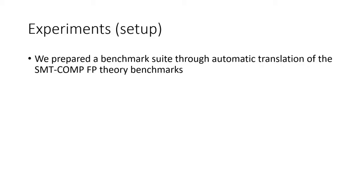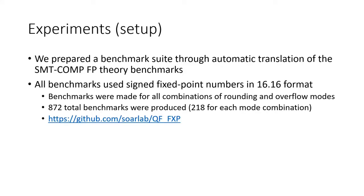We prepared a benchmark suite through automatic translation of the SMTComp floating-point theory benchmarks. This gave us a ready source of benchmarks that we consider to be at least interesting and challenging, if not necessarily meaningful. All benchmarks were translated into queries using signed fixed-point numbers with 32 total bits and 16 fractional bits. We chose this format because it is the most commonly used in software. We extended the benchmark suite by specifying each of the four rounding mode and overflow mode combinations, specifically round up with wraparound, round up with saturation, round down with wraparound, and round down with saturation. In total, we generated 872 benchmarks with 218 for each rounding mode and overflow combination.